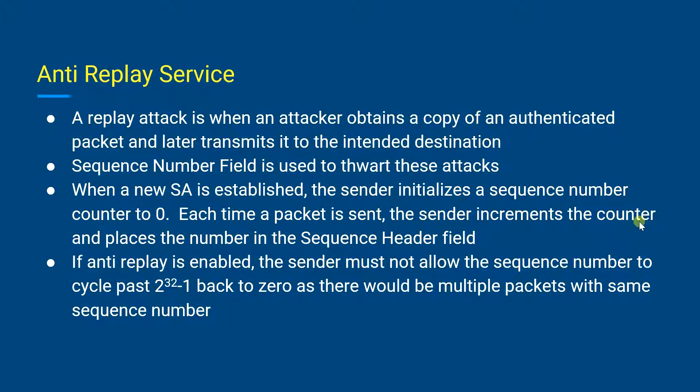By default, the sender must not allow the sequence number to cycle past 2^32 minus one back to zero, otherwise there would be multiple valid packets with the same sequence number. So if the limit of 2^32 minus one is reached, the sender should terminate this particular security association and negotiate a new SA with a new key.